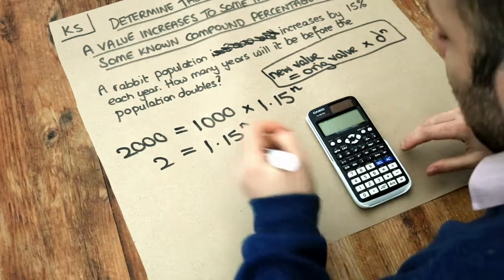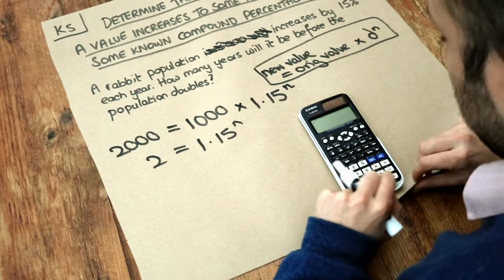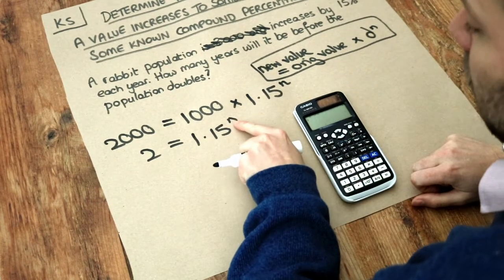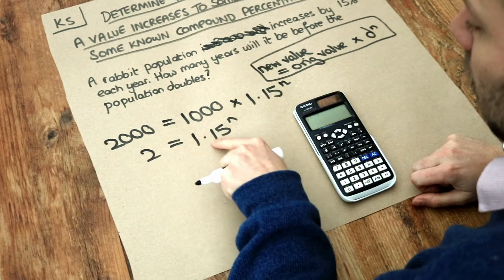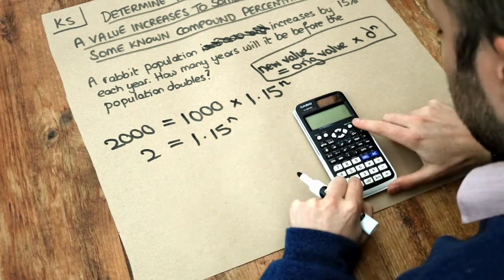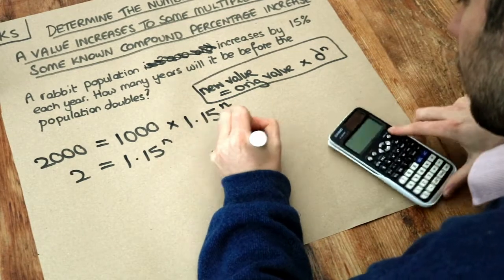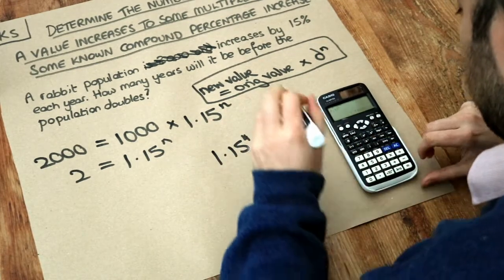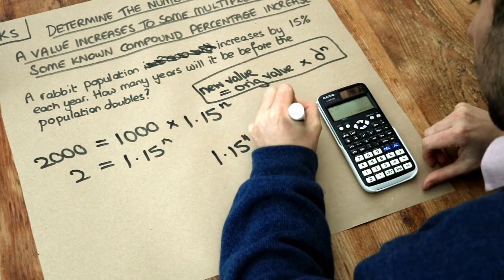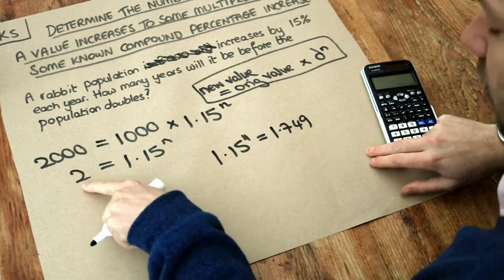Now how are we going to solve this? Well the way you expect to do it is just to use trial and error. So we could just try different powers of n until 1.15 to that power of n is going to give you 2. Well let's first say try 1.15 to the power of 4. To the power of 4. You get 1.749. That's not yet 2, is it?